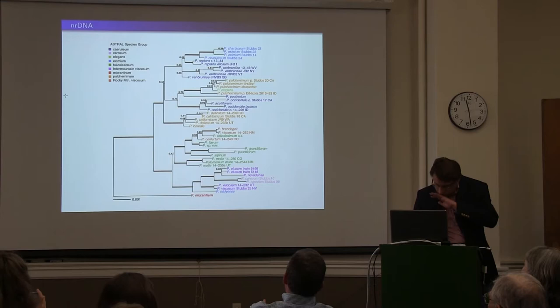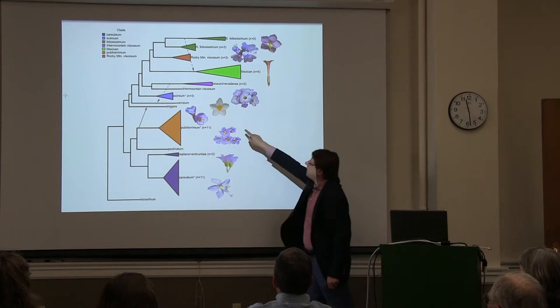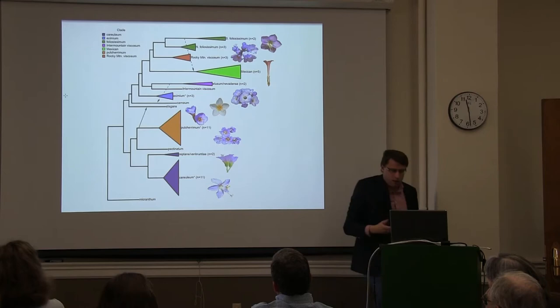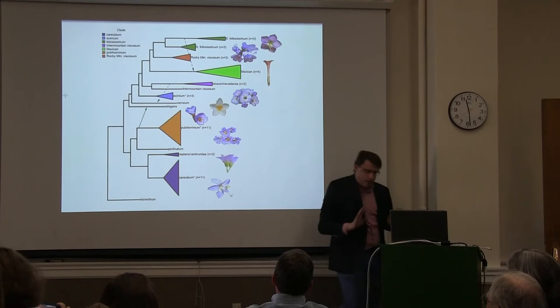This is a summary of the evolutionary history of Polemonium, showing our three reticulation events. The triangle bars correspond more or less to the species diversity based on accepted species. I didn't sample that much in the elusum lineage, but there is a lot of very closely related species in there.